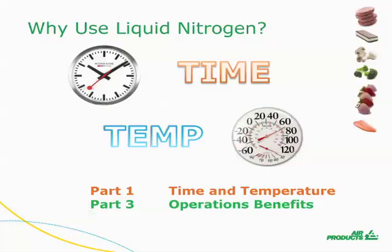We discussed in Part 1 that freezing and cooling foods is the removal of heat by placing food in a cold temperature environment for a period of time. If the time and temperature are appropriate, the food will be cooled or frozen as desired. If you missed Part 1, we encourage you to go back and watch that episode before continuing.